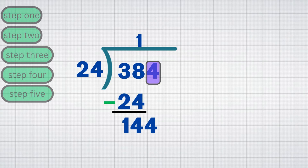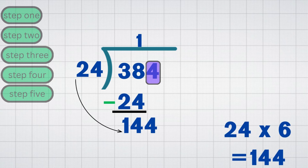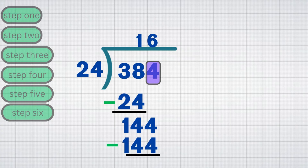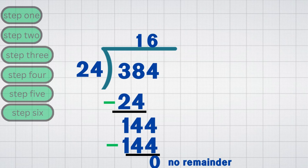Step 5: Divide again. 24 fits into 144 exactly 6 times, because 24 multiplied by 6 equals 144. Write 6 in the quotient next to 1. Step 6: Multiply and subtract. Multiply 6 by 24 equals 144. Subtract: 144 minus 144 equals 0. No remainder. Final answer: 384 divided by 24 equals 16.